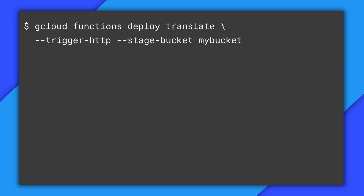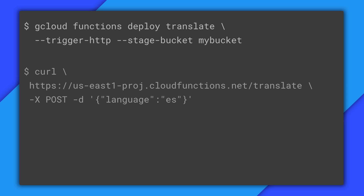We deploy using the gcloud command line tool. And Cloud Functions automatically creates a fully qualified domain name and generates an SSL cert, so we can do HTTPS without any additional configuration.